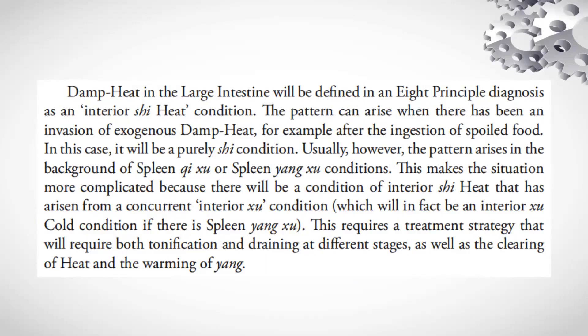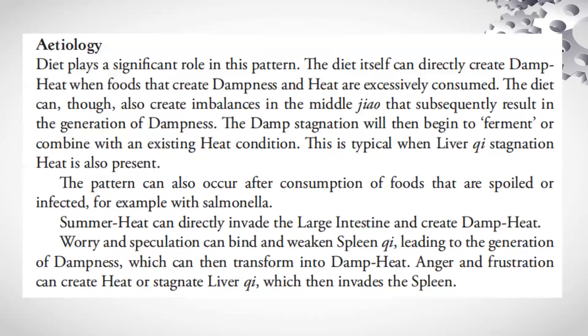This requires a treatment strategy that will require both tonification and draining at different stages, as well as the clearing of heat and the warming of yang. Diet plays a significant role in this pattern. The diet itself can directly create damp heat when foods that create dampness and heat are excessively consumed. The diet can also create imbalances in the middle jiao that subsequently result in the generation of dampness. The damp stagnation will then begin to ferment or combine with an existing heat condition — this is typical when liver qi stagnation heat is also present. The pattern can also occur after consumption of spoiled or infected foods, for example with salmonella.